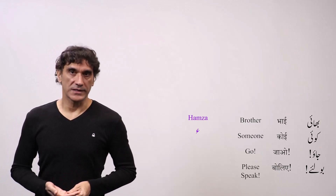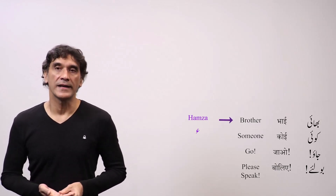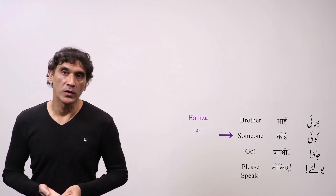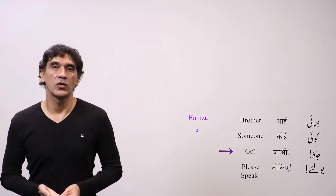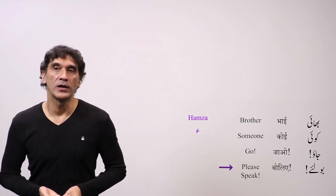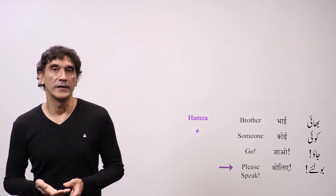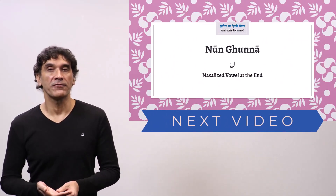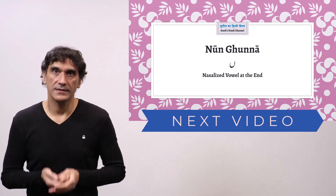Let's now take all the words together. The first word is Bhai, where the vowels A and E are in a row. The next word is Koi, in which the vowel O is followed by the long E. In the third word Jao, the vowel A is followed by O. And in the final word Boliye, the short E is followed by A — that is, Iye — Boliye. In our next video we will take Noon Gunna, the nasalization of the final vowel in Urdu. See you there. Namaskar and Salaam.